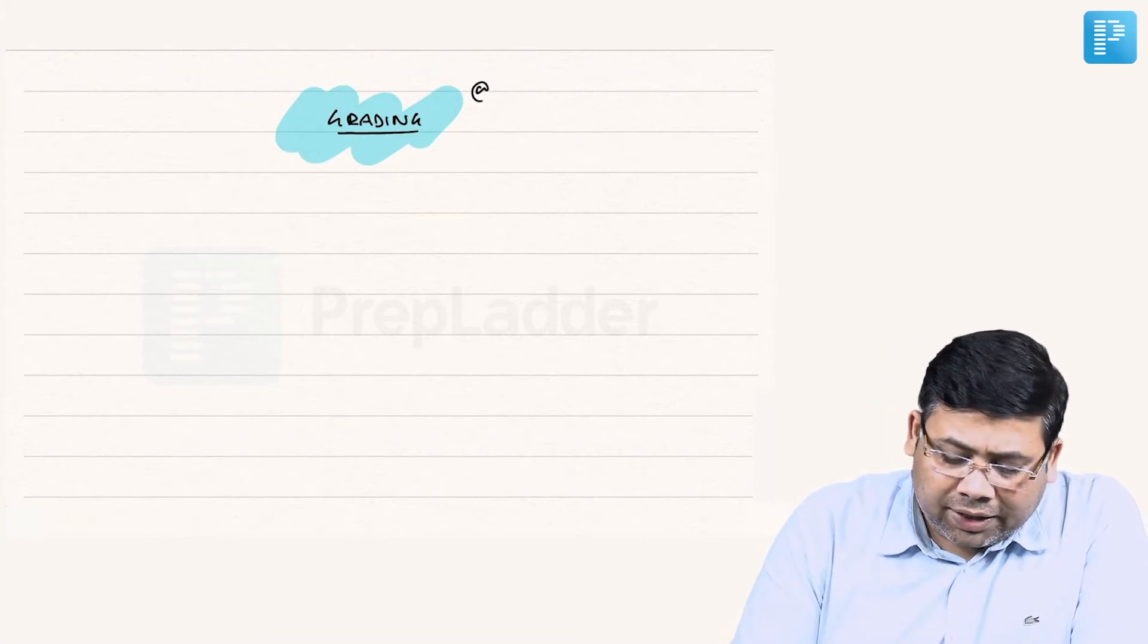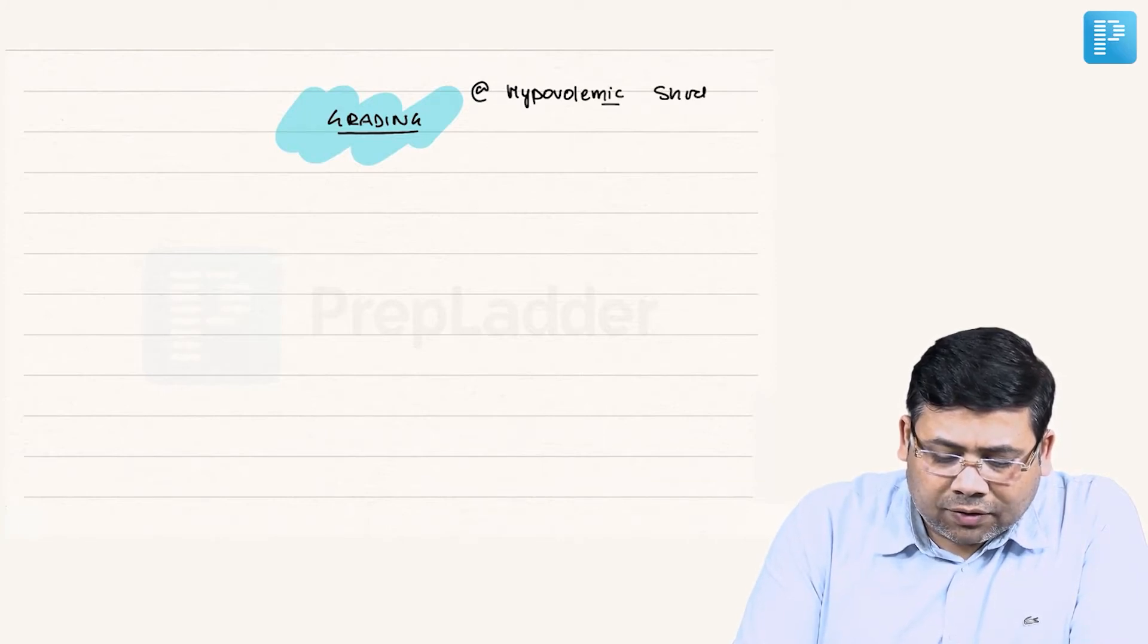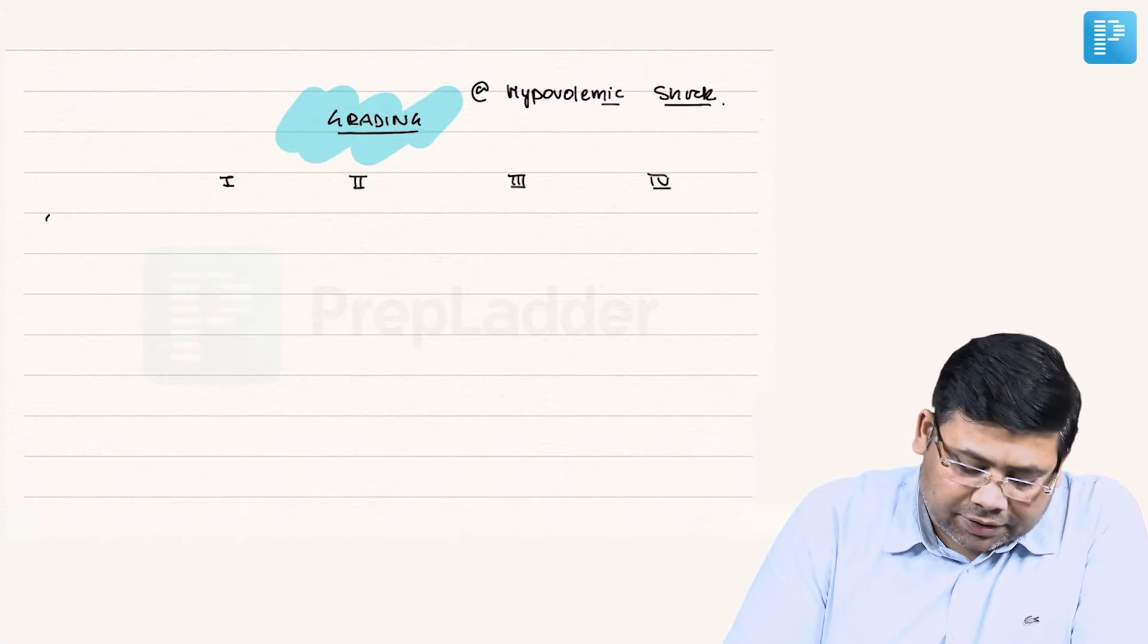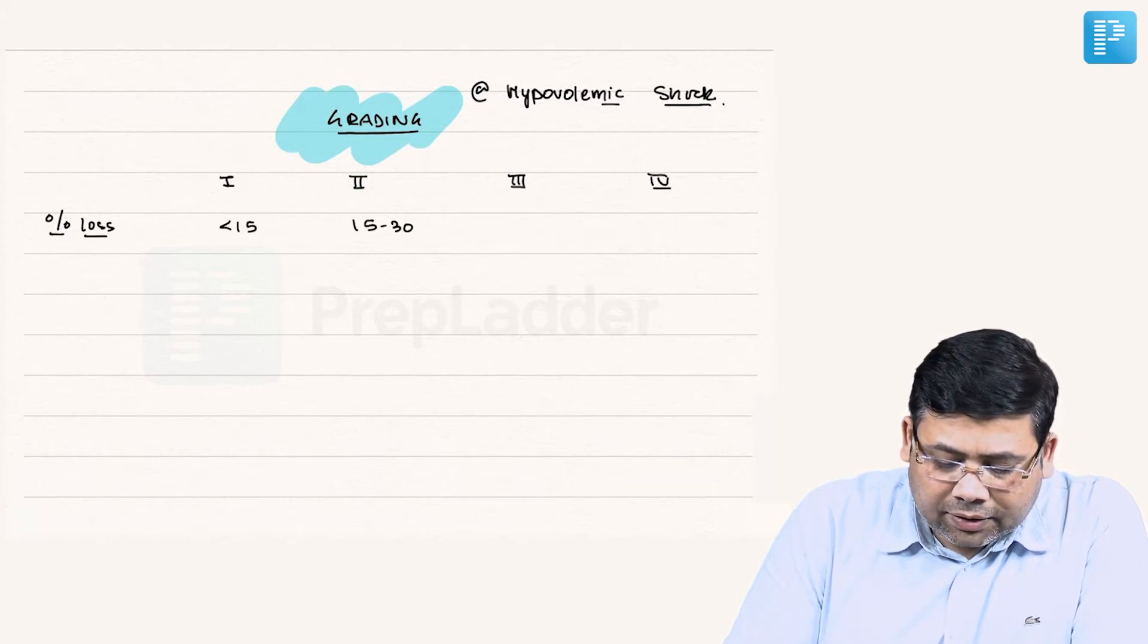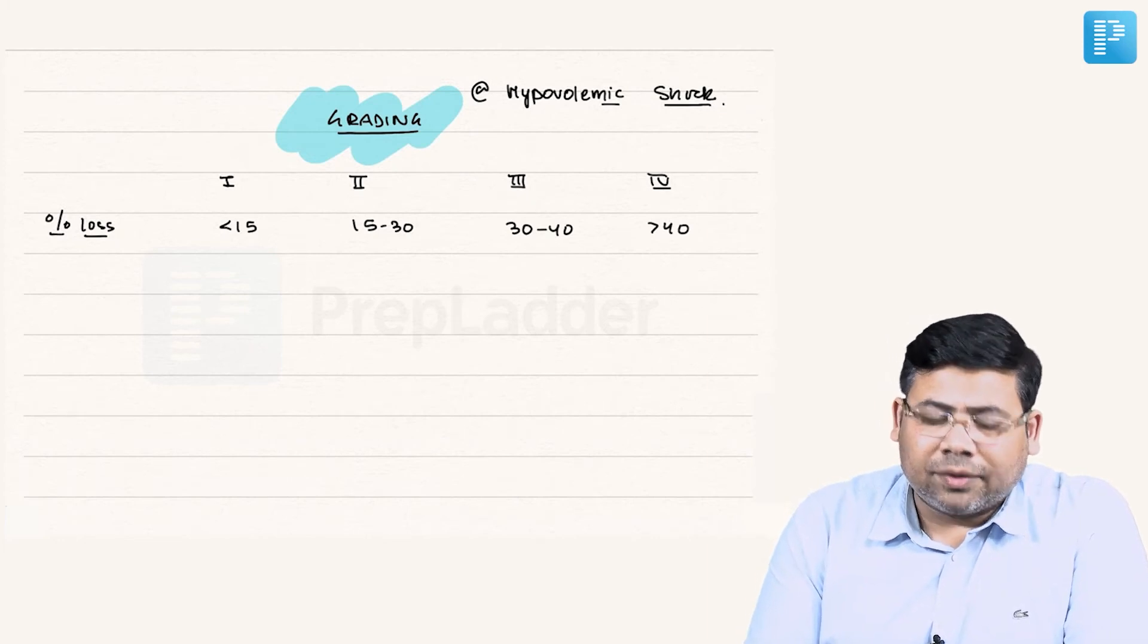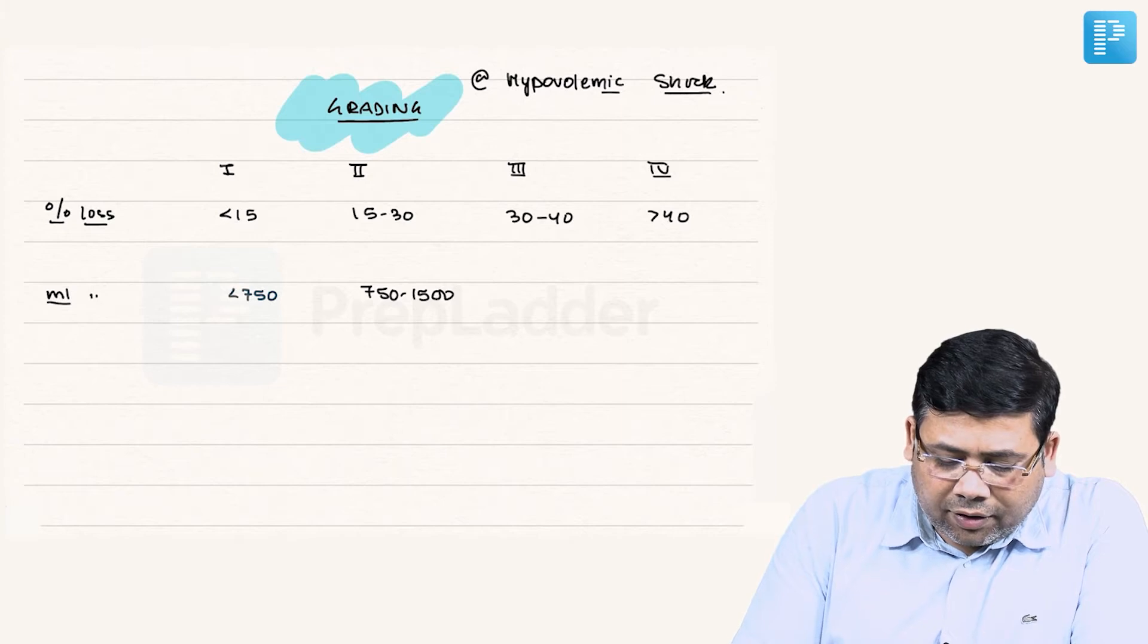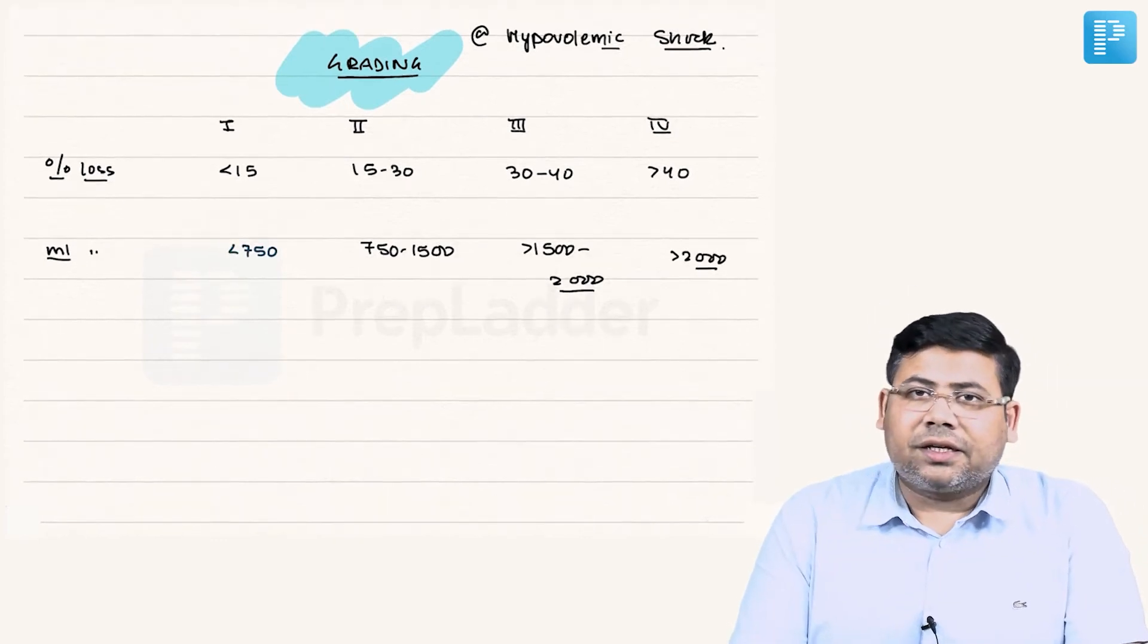How do we decide grading of hypovolemic shock? This is very important. We see this based on percentage blood loss or ML blood loss. For percentage loss: less than 15%, 15 to 30%, 30 to 40%, and more than 40%. In terms of ML loss: less than 750, 750 to 1500, 1500 to 2000 ml, and more than 2000 ml, which is grade 4.